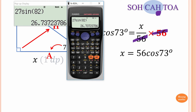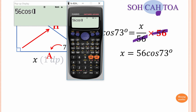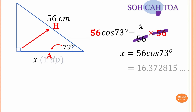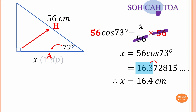Put it in the calculator — make sure you're in degree mode, otherwise you'll get the wrong answer. So 56 × cos(73°) gives 16.37 and so on. Rounding to one decimal place: we look at the digit after 3, which is 7 — more than 5 — so we round up. Therefore x = 16.4 centimeters.